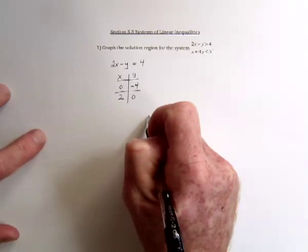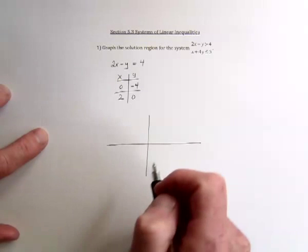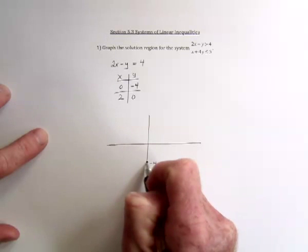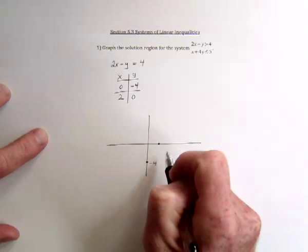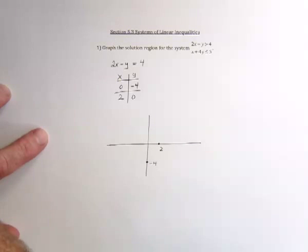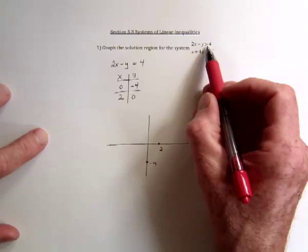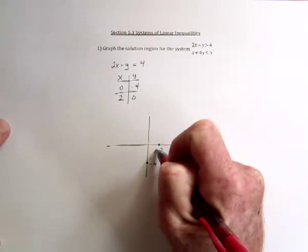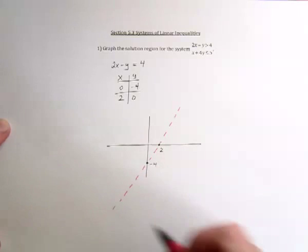Okay, now graph that line. So we've got 0 negative 4, and 2 comma 0. So the x-intercept is at 2. And for this line, if there's not an equal sign on the inequality, you use a dotted line. So use a dotted line that will go through these two points. And there's part of it.